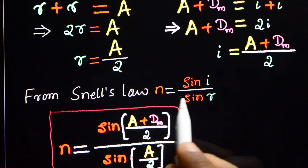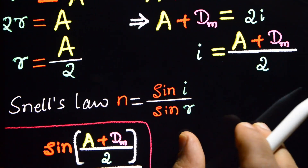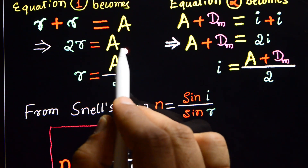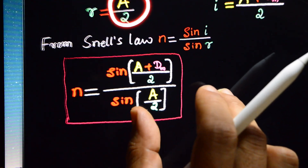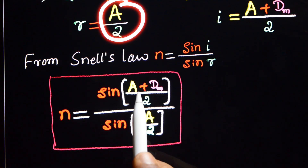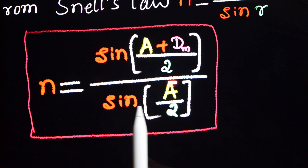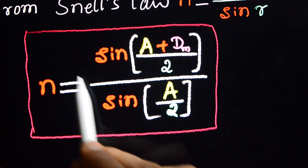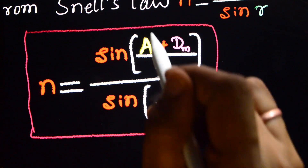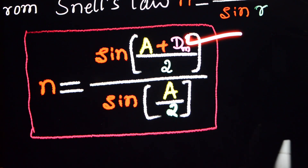Therefore, n equals sine[(A plus dm)/2] divided by sine[A/2]. This is the refractive index of the prism in terms of the angle of the prism A and the angle of minimum deviation dm.